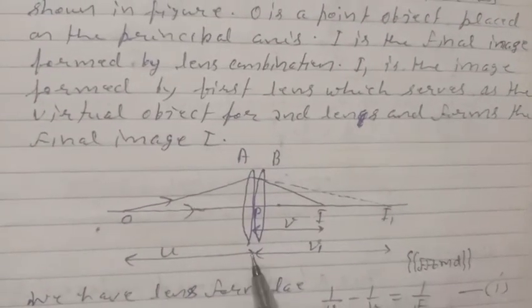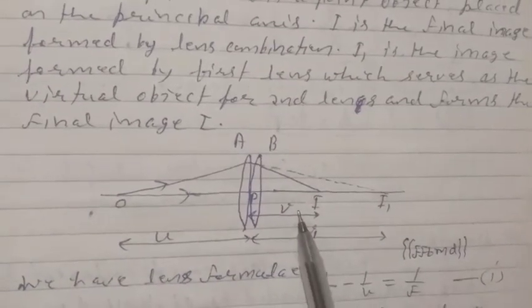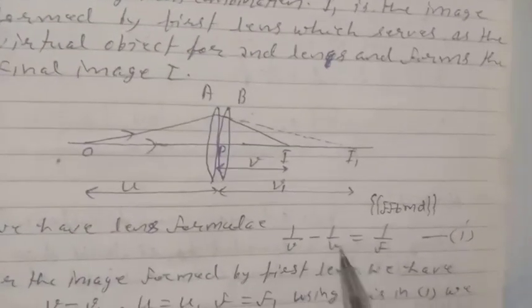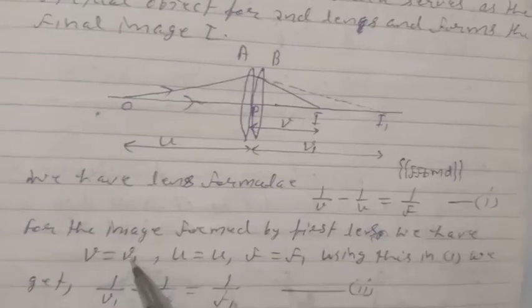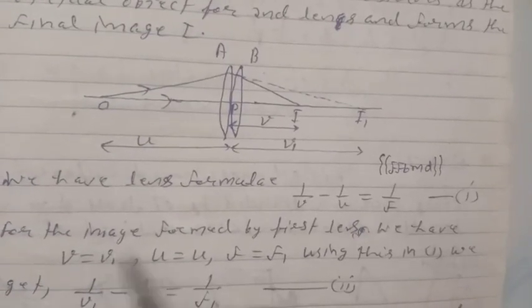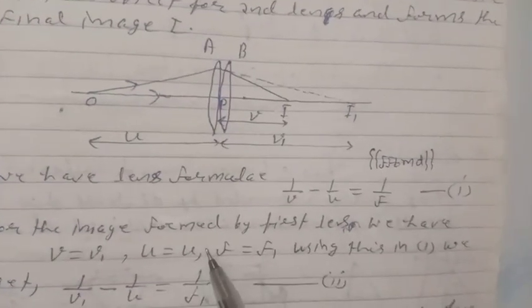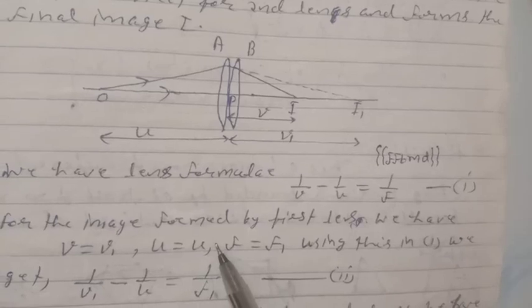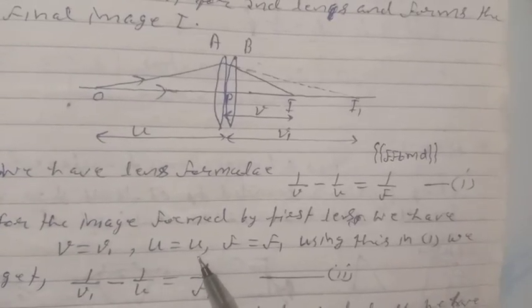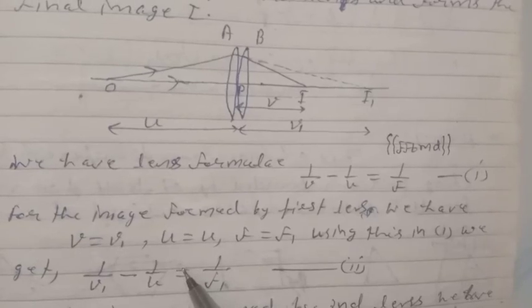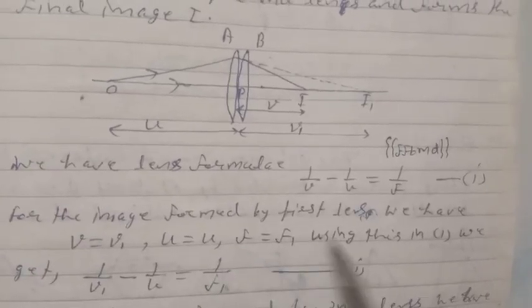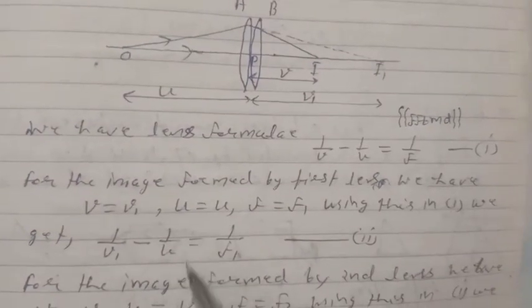This is the object distance, this is the final image distance, and this is the image distance for the second lens. Using the lens formula 1/V minus 1/U equals 1/F, for the image formed by the first lens, V equals V1 and U equals U and F equals F1, giving us: 1/V1 minus 1/U equals 1/F1.